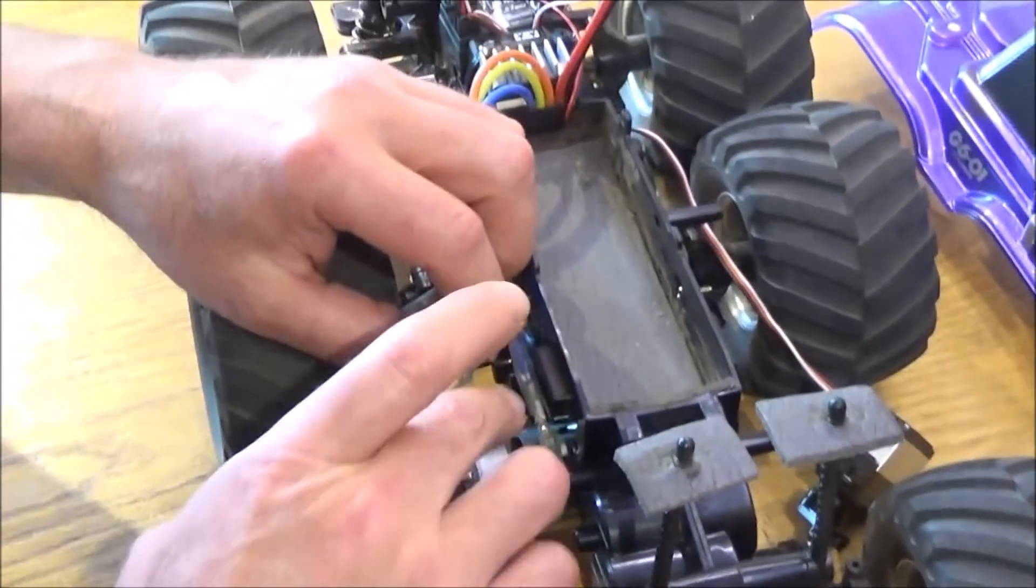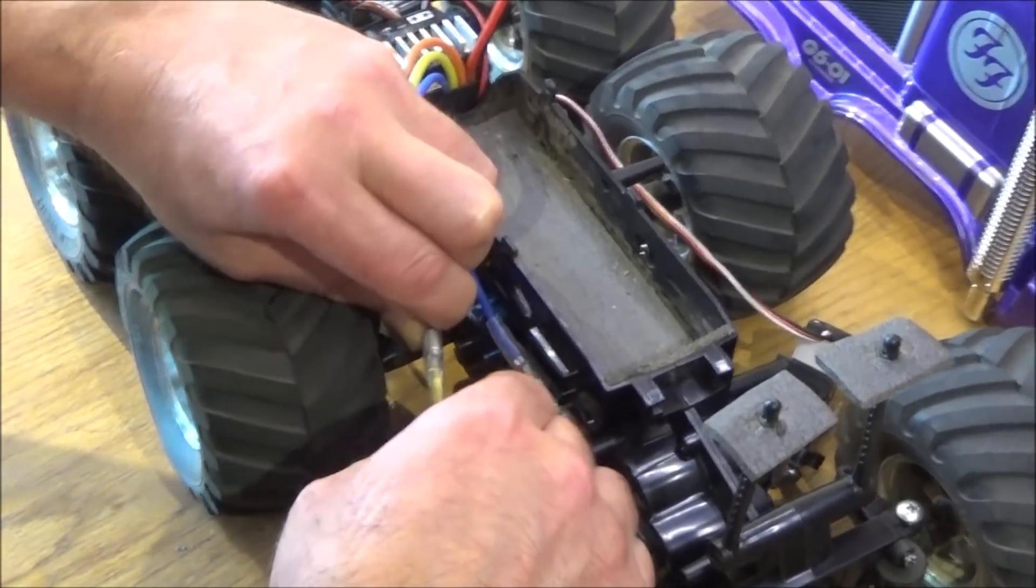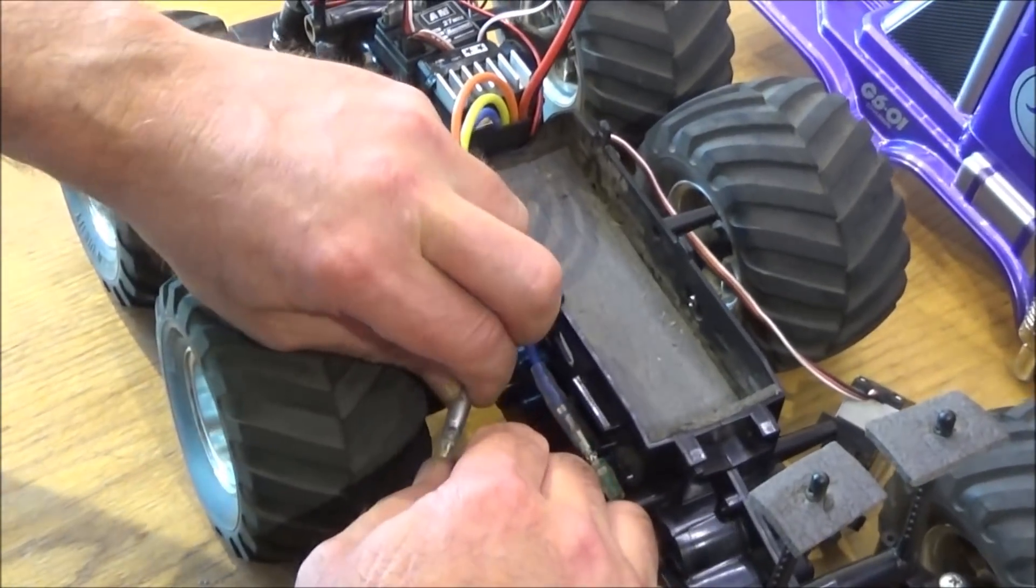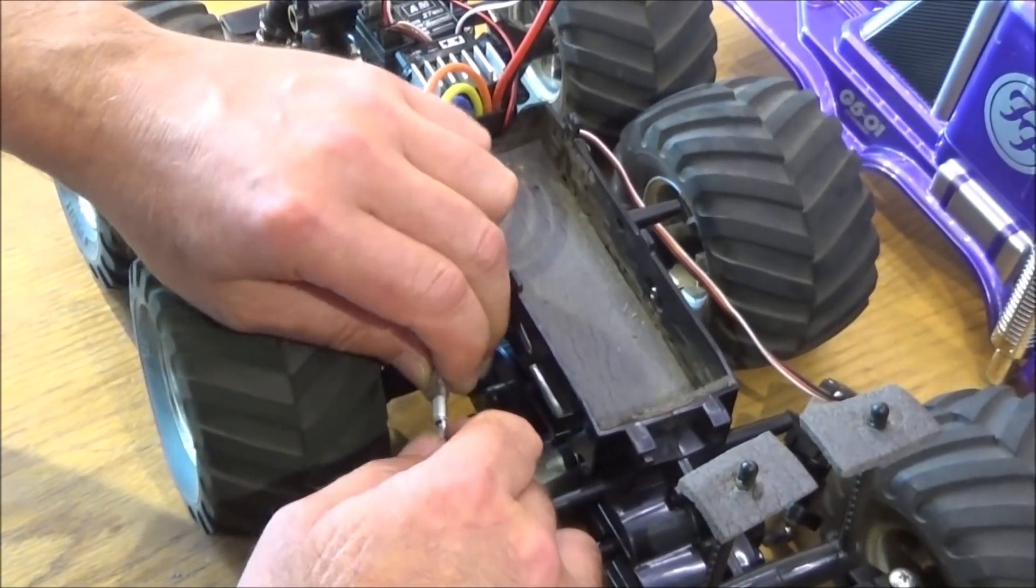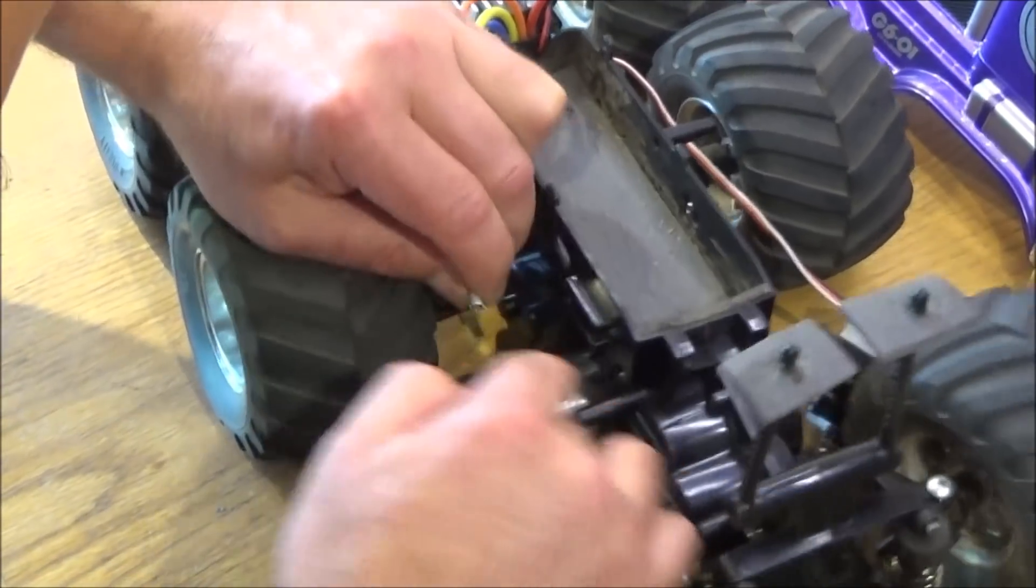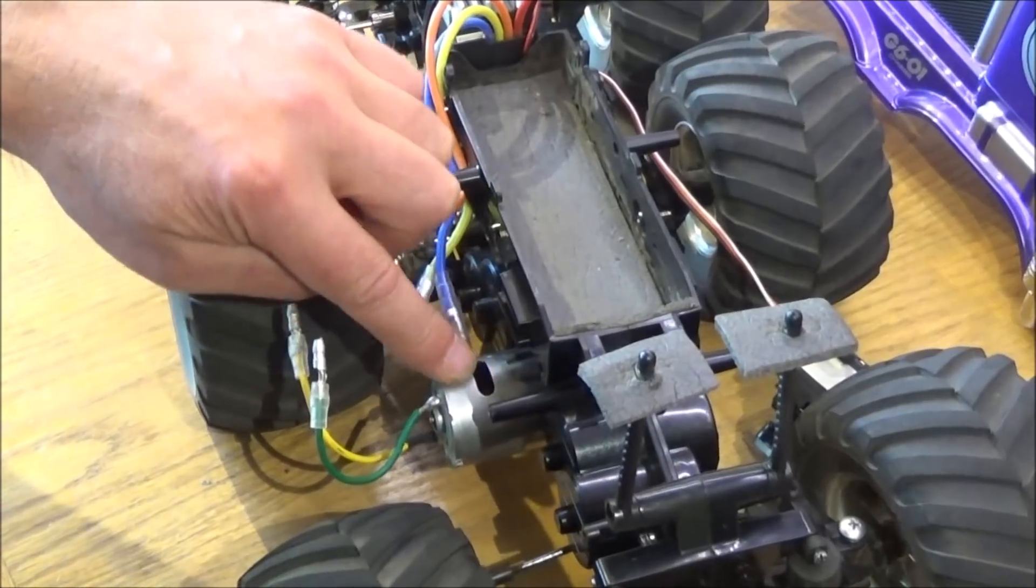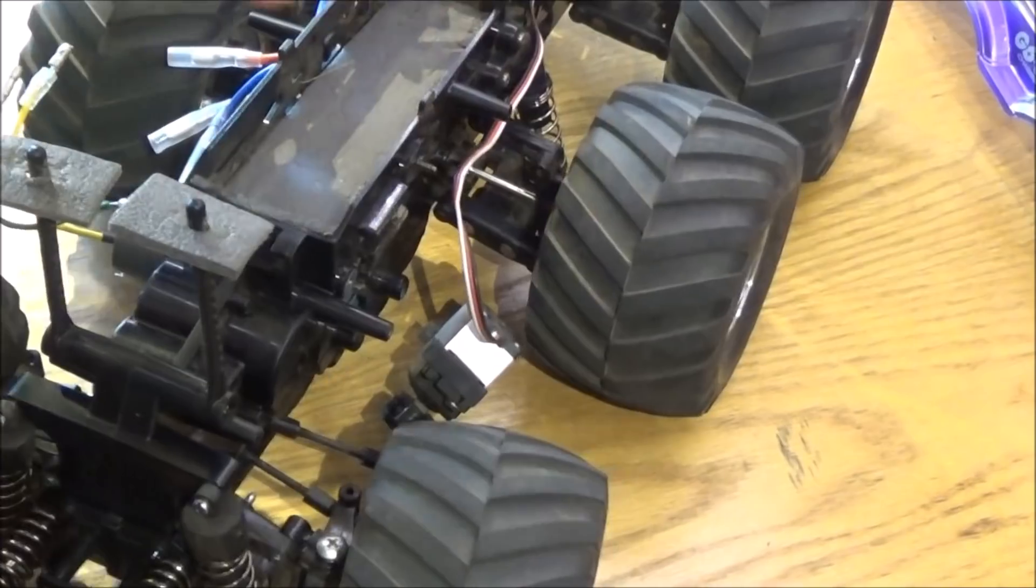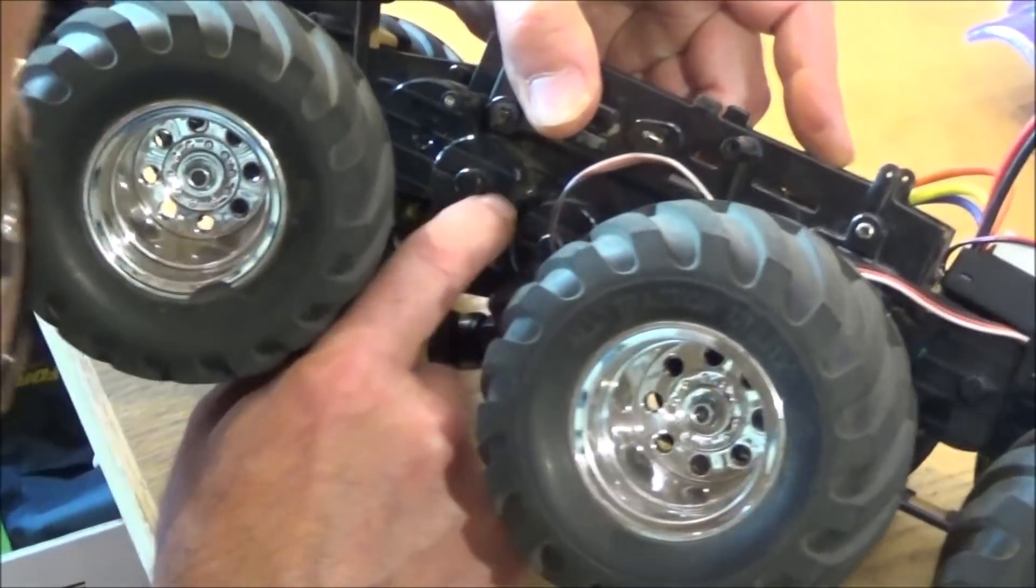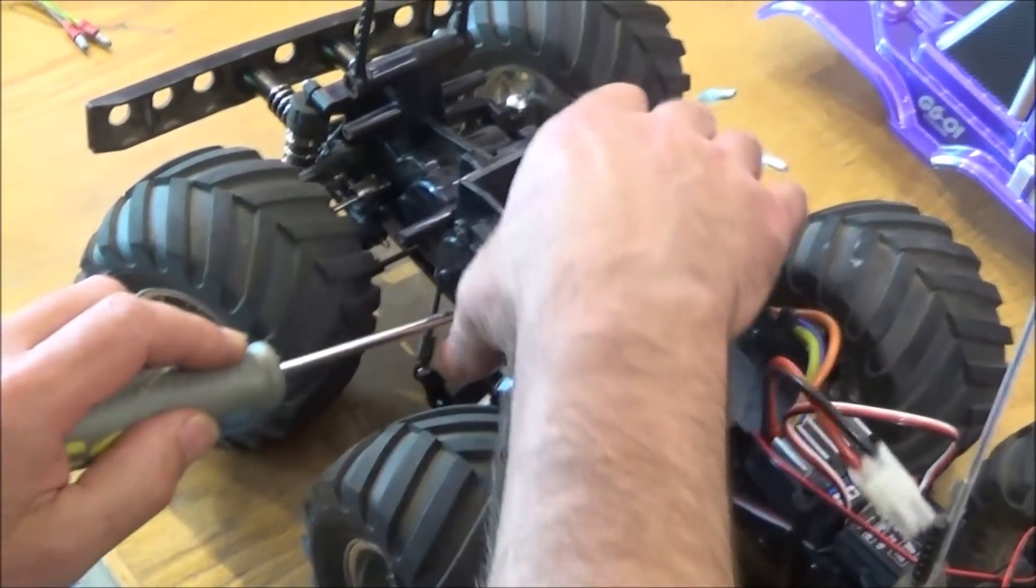We need to take the standard can off, so obviously, just unplug the bullet connectors. Sometimes this can be more difficult than you think. Very tight. In order to take the two screws out that hold the motor, the only thing you need to do is take the servo off, so that you can get at the two screws that hold the motor. I'm just going to unscrew this now.